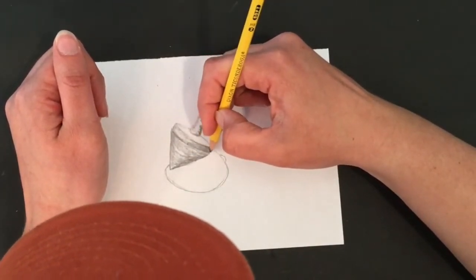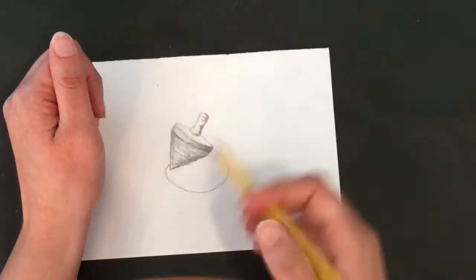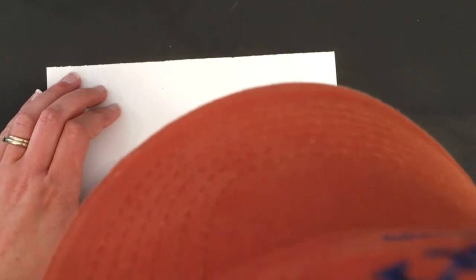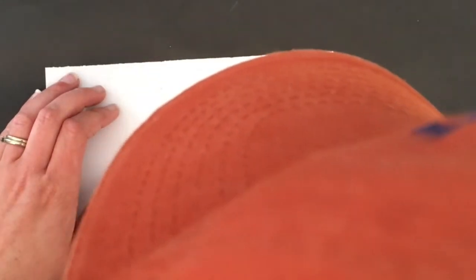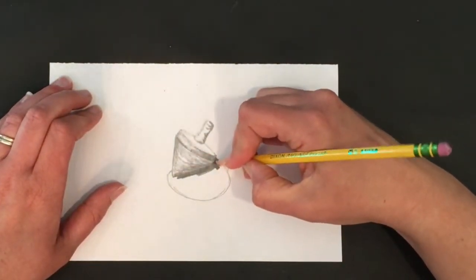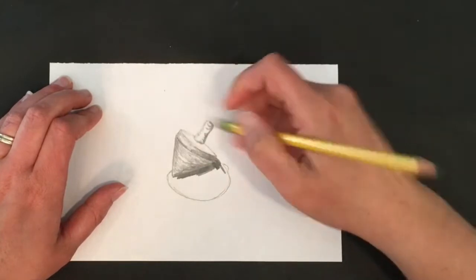Remember you do not need really fancy drawing tools to do excellent observational drawing. Now I'm going to deal with the cast shadow. This is where I'm going to get in there with some of my really firm pressure because of that strong light source. I've actually got a pretty solid cast shadow.